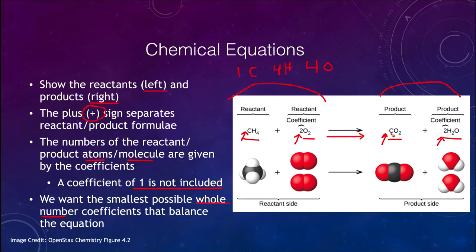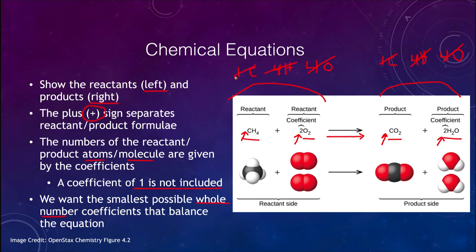On the right-hand side, we still have one carbon, so carbon is balanced. We have two times two H2s, which is four hydrogens. We have two oxygens from the CO2 coefficient, and two oxygens from the two water molecules, giving us four oxygens total. So four oxygens cancel, they're the same; four hydrogens are the same; and one carbon is the same.